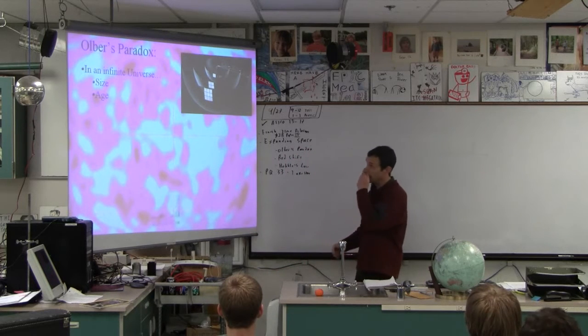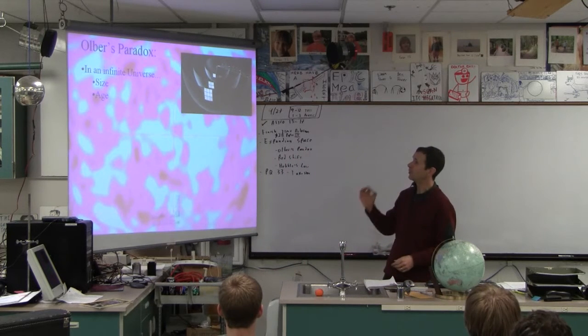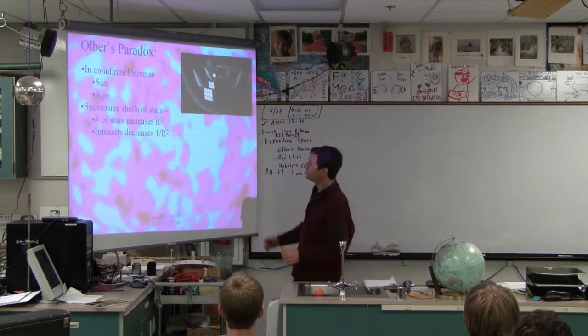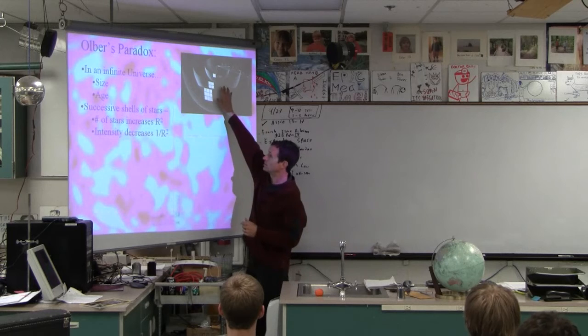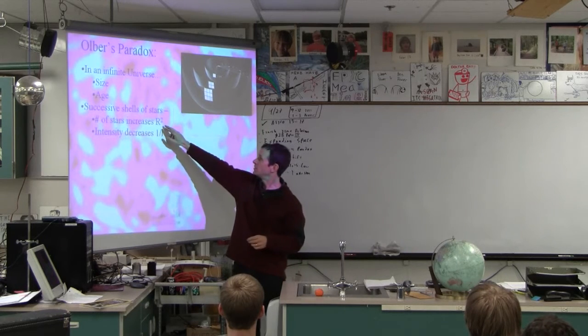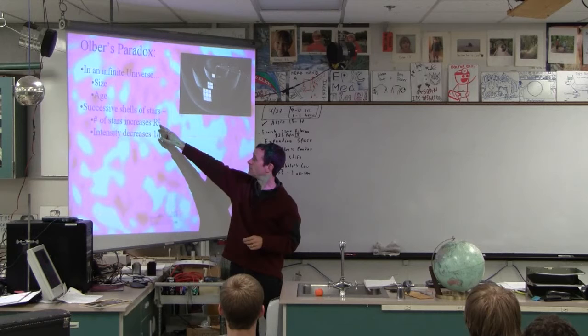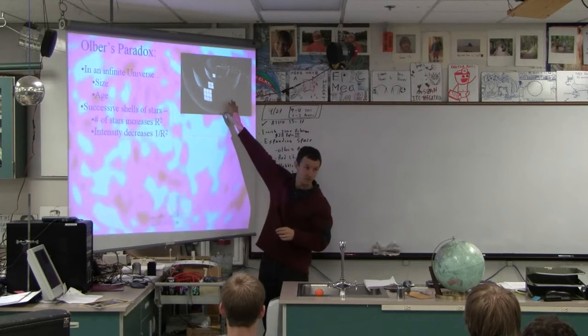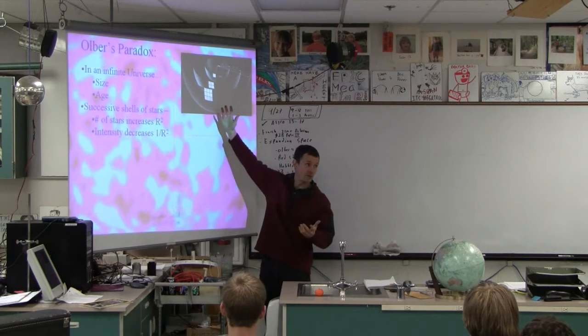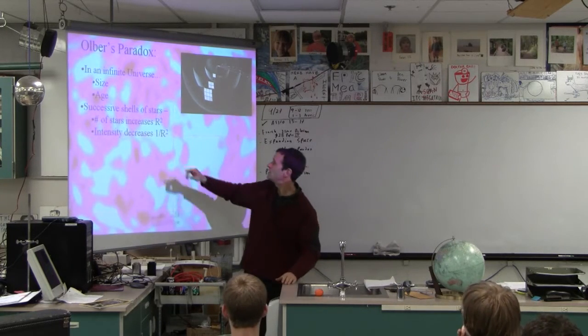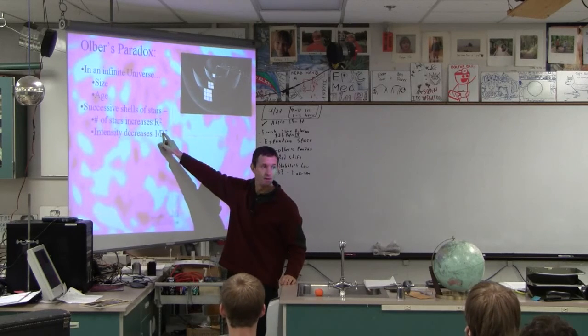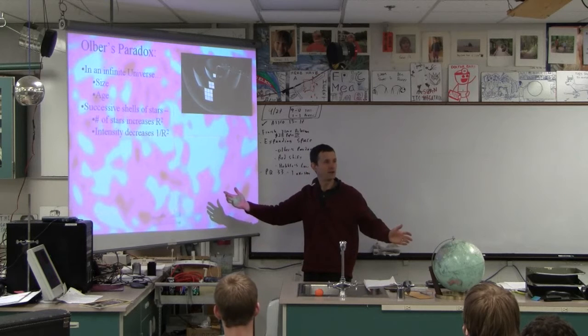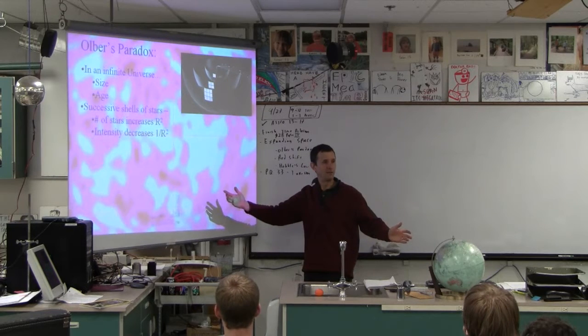Here's the paradox, this is Olber's paradox. If the universe is infinitely old and infinitely large, and if we have successive shells of stars, the number of stars increases by r squared, because the surface area of these things is 4 pi r squared. The intensity decreases at 1 over r squared. Well, this is a sort of interesting thing. Doesn't that mean that it's neutral?